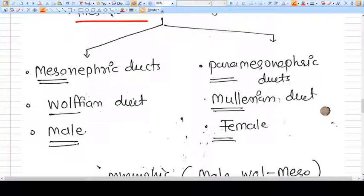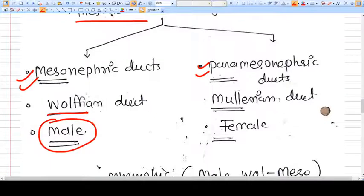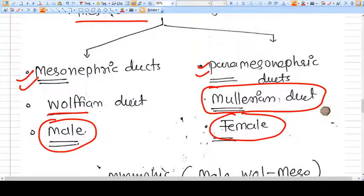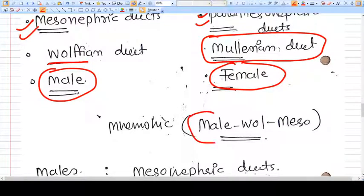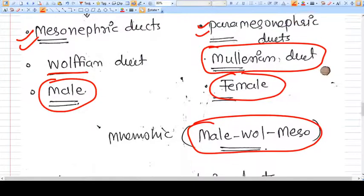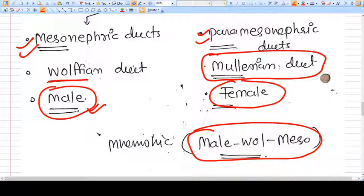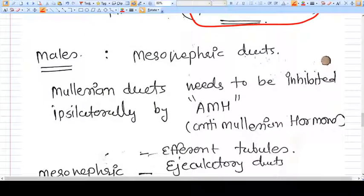These two ducts are mesonephric duct and paramesonephric duct. Mesonephric duct, also called Wolffian duct, is present in males. Paramesonephric duct, also called Mullerian duct, is present in females. I have a mnemonic which is very easy to remember: male-wall-meso. Male means it is present in male, wall means Wolffian duct, and meso means mesonephric duct. So in males we have mesonephric duct.